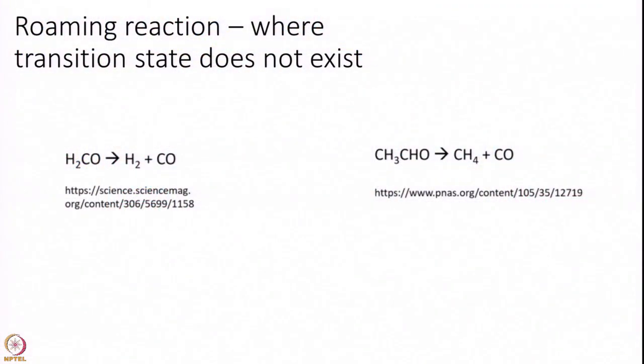These are called roaming mechanisms. I am highlighting here a couple of examples. This is one of the first examples that was first shown H2CO going to H2 plus CO. Now, as it turns out for such a reaction a transition state does not exist. You can think of this molecule, you have only 4 atoms here.